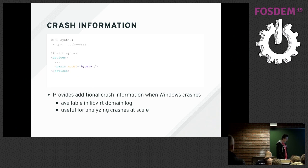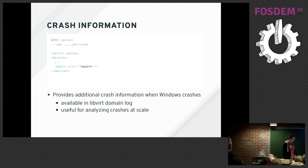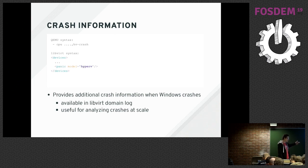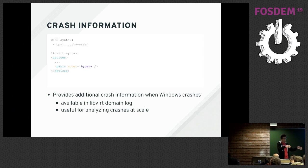Crash information is quite interesting. When Windows crashes you get a blue screen. If you're running VMs at larger scale, you may want to know whether you're seeing the same crashes on different hosts or different crashes. Windows can provide some information — basically five registers — on crash, and you can get this information. If you enable the feature, in libvirt log you get it by default; in QEMU you need a QMP command. By comparing these in logs you can see if you're seeing the same crashes or different ones, which can come in handy.